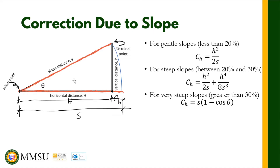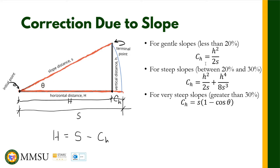Our formula for solving the horizontal distance H is: H equals the slope distance minus the correction due to slope. For a gently sloped terrain — that is, less than 20 percent slope — we use the formula: correction equals h-squared over 2S.